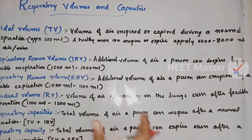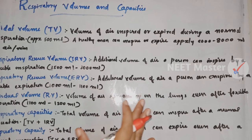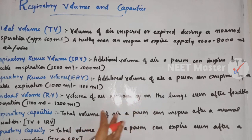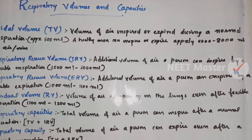A healthy man can inspire approximately this tidal volume per minute during normal respiration. We can breathe in a normal respiration during a normal respiration — that is the tidal volume of air.